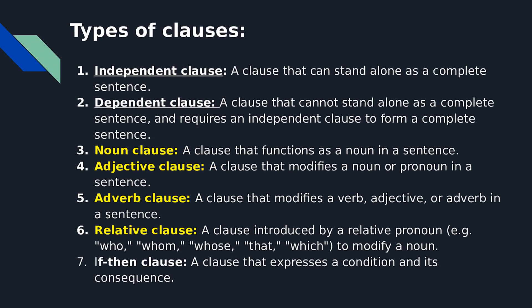What are the types or the kinds of clauses? There are seven types of clauses that you need to know. Number 1: Independent clause, which is a clause that can stand alone as a complete sentence.